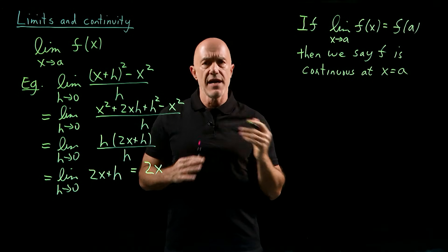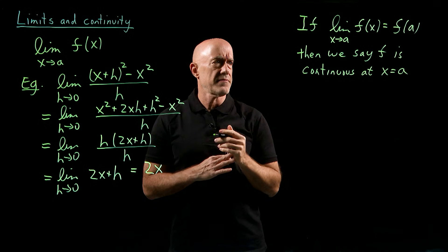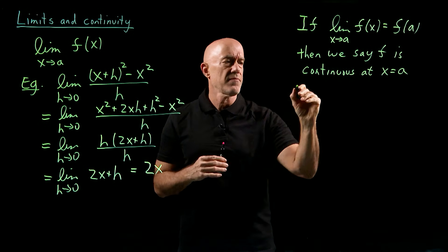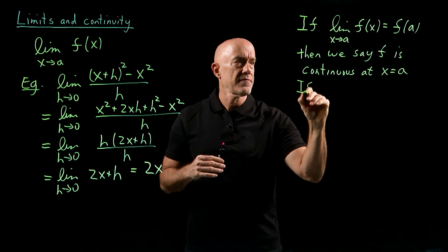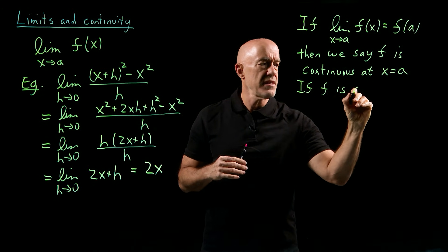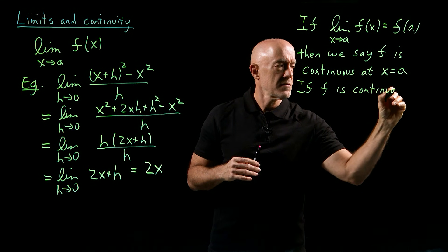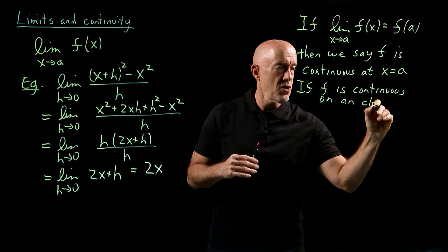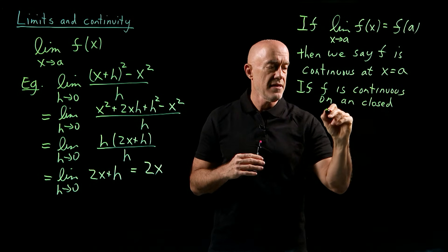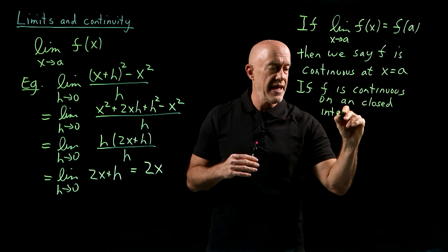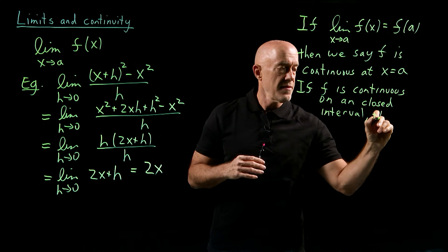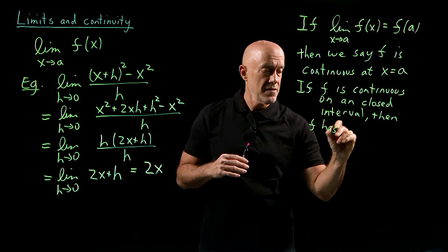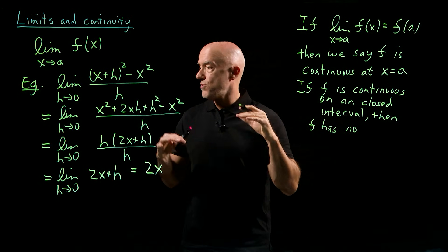So that's the definition of continuity at a point. We can also have a function which is continuous over an interval. So if f is continuous on an interval, or it should be a closed interval, meaning that the endpoints are contained in the interval...